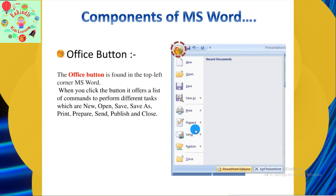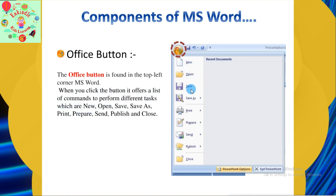The first component of MS Word is the Office Button. The Office Button is found in the top left corner of MS Word. When you click the button, it offers a list of commands to perform different tasks, which are: New, Open, Save, Save As, Print, Prepare, Send, Publish, and Close.